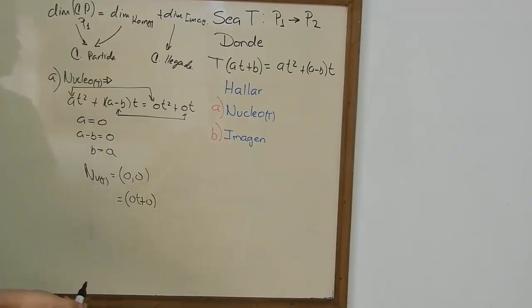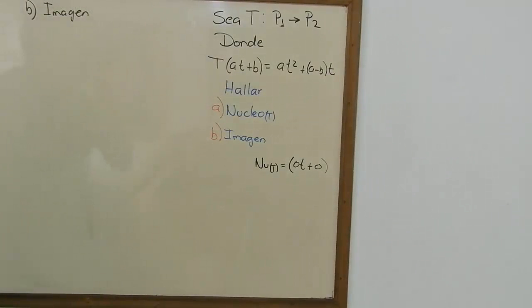So we find a null space, right? So the dimension of this is equal to 0. That means the dimension of the image or the range is going to be 1. And we know that because of the equation we began with.